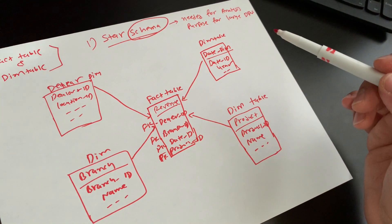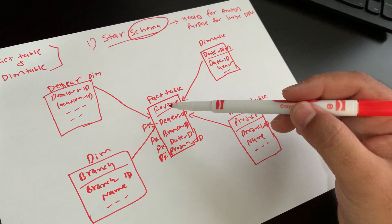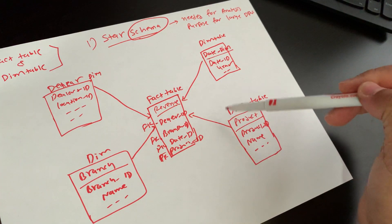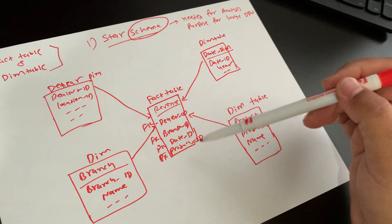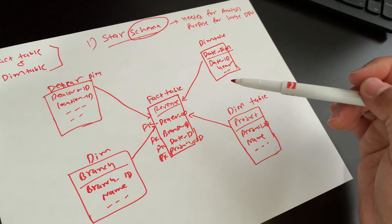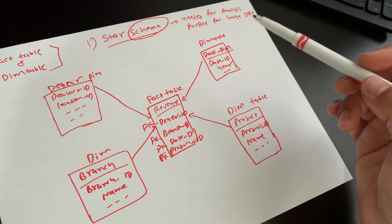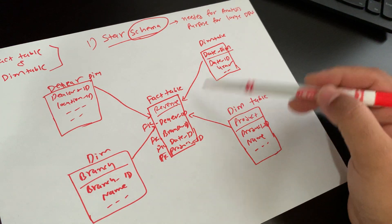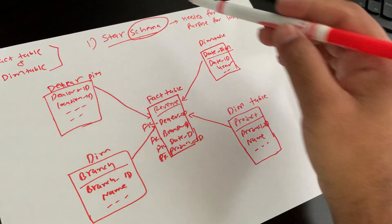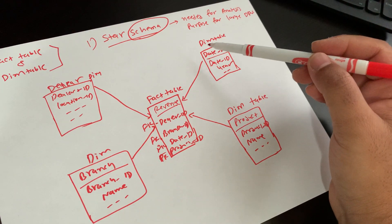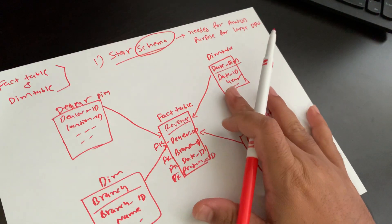In a simple definition, in star schema the center of the star has one fact table and a number of associated dimension tables. It is also known as star join schema. It is optimized for querying very large datasets because there are limited joins — if you want to get some information, you don't have multiple dimension table joins, so queries are fast on large databases.